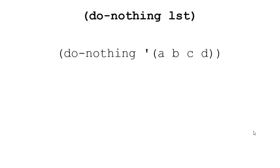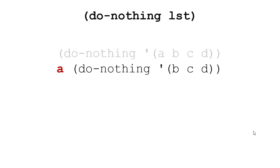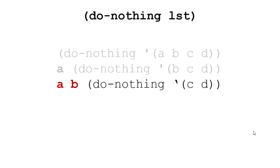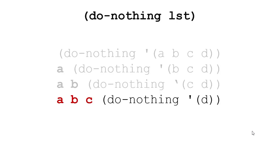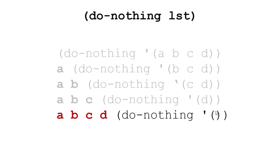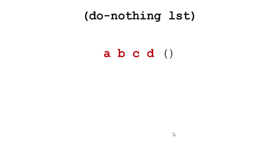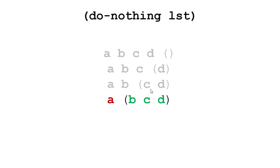So do-nothing will work like this. Suppose we want to do nothing with A, B, C, D. We take A out and do nothing with B, C, D. Then we take B out and do nothing with C, D. Then C out and do nothing with D. Finally we take D out and do nothing with the empty list — at which point we just return the empty list. As we unravel the recursion, we add D back, then cons C, then B, then A, until we get the list A, B, C, D as our result.